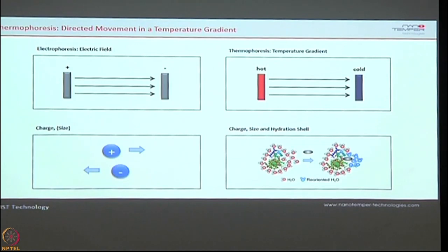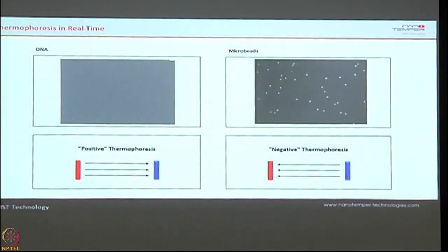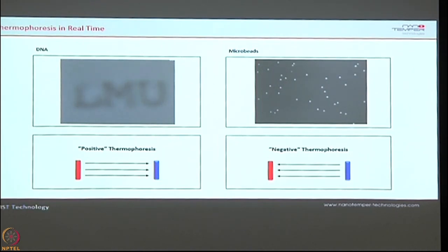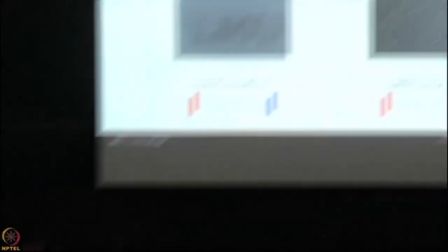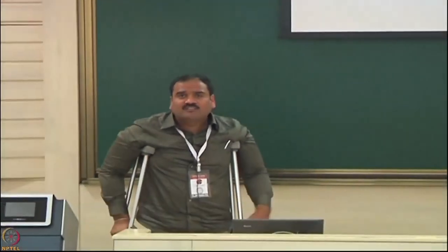This technique is very sensitive for all three parameters, and there will be a change in thermophoresis behavior when there is any change in these parameters. Generally, thermophoresis means the molecules move away from the heat. As you can see here, this is a cover slip coated with LMU — when you shine a laser, all the fluorescent molecules are moving away. That is called positive thermophoresis.